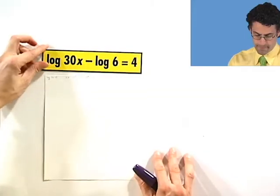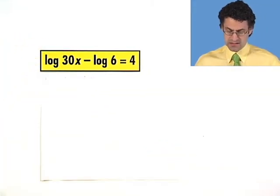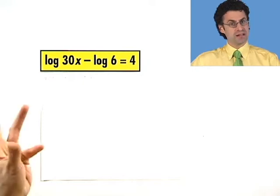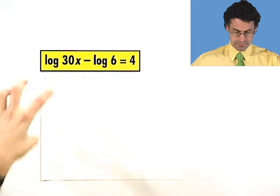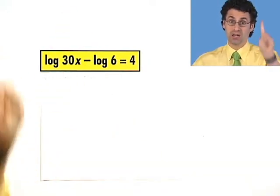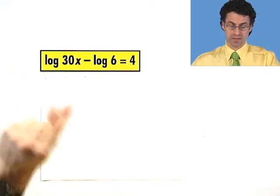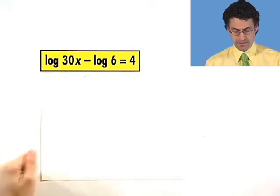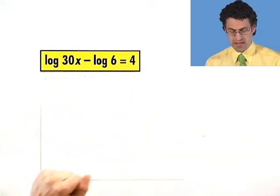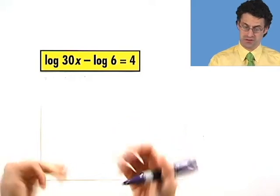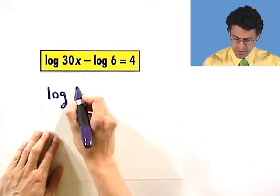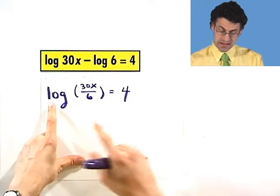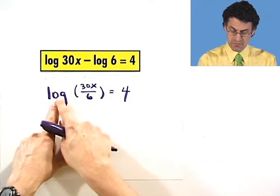So the next one, log of 30x minus log 6 is equal to 4. What do we do here? Well, here I've got lots of logs running around. If you want to do any kind of funny trick using raising things, having exponents and putting 10 to a power or things of that sort, you've got to have just one log alone on a side. And so here I see log minus log, that's not good. So I better use some other properties of logs that I know. In particular, I can use the property that says the log of something minus log of something else is the same thing as log of the quotient of those two things. So I could write this as log of 30x divided by 6 equals 4. Why is that? Because the property that says log of a quotient is the difference of the logs. And that's what I have here.